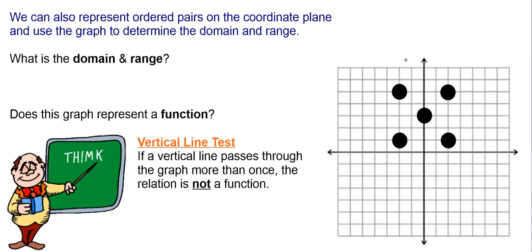In this case, we can clearly see that the x values for these five dots are just negative 2, even though it's used twice, 0, and 2, even though that's used twice. And the y values are 1, 3, and 5, even though 1 and 5 are used twice.